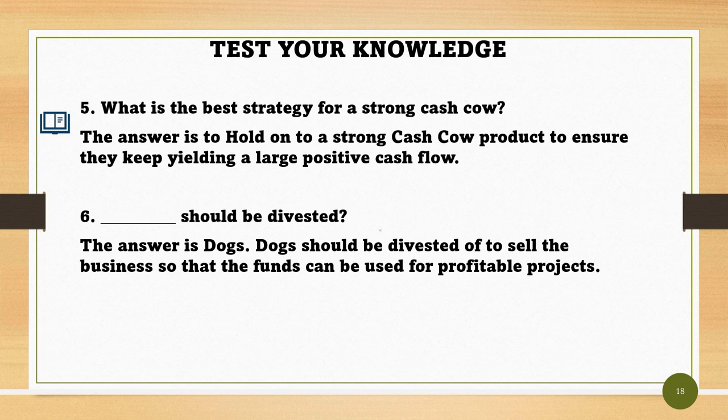Question 6: Which category should be divested? The answer is Dogs. Dogs should be divested — that is, to sell the business — so that the funds can be used for profitable projects.